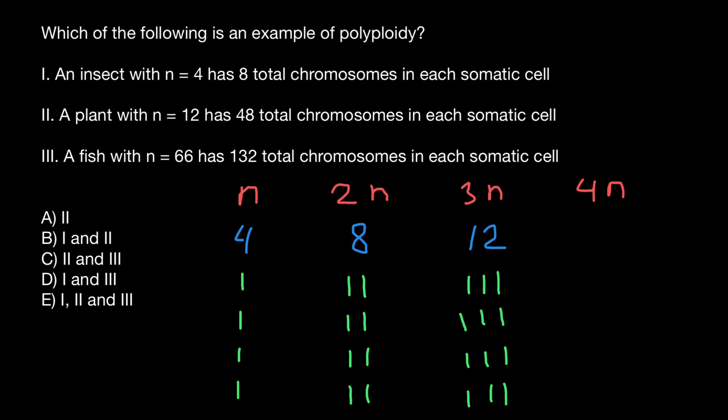But take a look. Tetraploid plant is going to have 4 sets of the chromosomes. So it would have 16 chromosomes and would be fertile. Take a look. It would have 4 chromosomes number 1, 4 chromosomes number 2, 4 chromosomes number 3, and 4 chromosomes number 4. Of course, in this case, we can divide them by 2. And here we also can divide by 2.